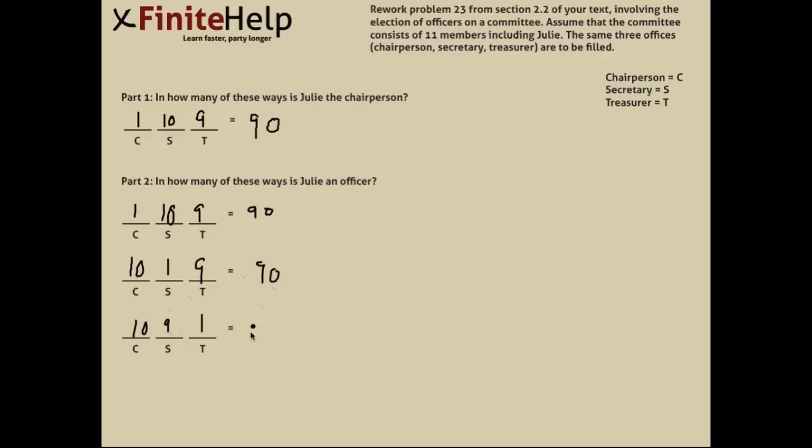Multiply across, you get 90 for each one. And then add them all together, and that's going to give you 270, which is the number of ways to select Julie as an officer, or the number of ways you can form a committee of three members out of 11 with Julie as an officer.